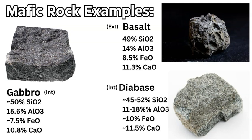The lower silica content means these magmas will flow more quickly. One of the main effects of silica in magma or lava is viscosity — the higher the silica, the higher the viscosity, making the magma thicker, slower, and more resistant to movement. With lower silica, as in mafic rocks, flow velocity increases and viscosity decreases.